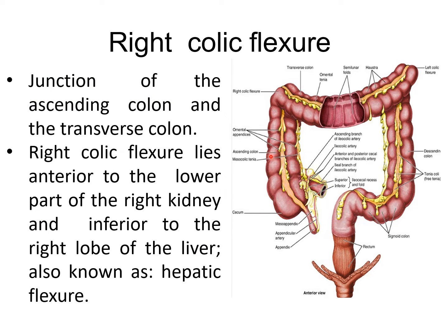Here you can see the ascending colon. It starts from the cecum and goes up to the under-surface of the liver, passing over three muscles and three nerves. The junction of the ascending colon and the transverse colon is called the right colic flexure, or hepatic flexure. It lies anterior to the lower part of the right kidney and inferior to the right lobe of the liver.